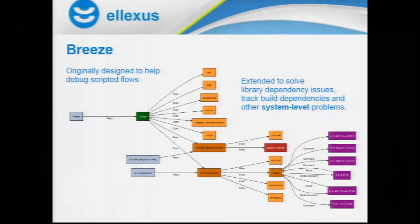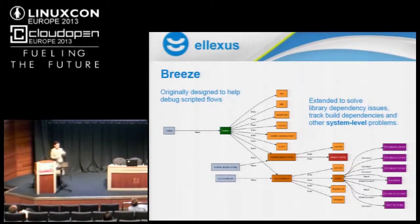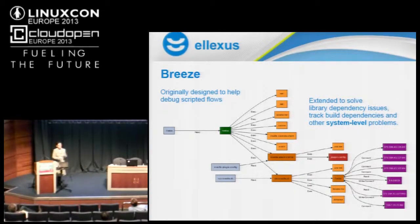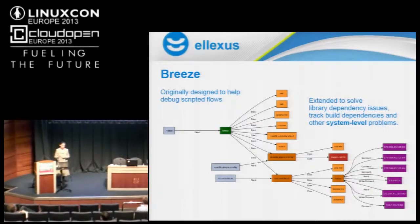So, this is what our tool looks like. We pull out tool hierarchies, program call hierarchies. What you're seeing there is actually a trace of Firefox. The root node is always shown in green. We show scripts in blue and programs in orange. So, what you're seeing there is that Firefox is actually an alias for a script. It calls two other scripts and a bunch of programs in the system. It then finally calls the Firefox binary itself, which makes a bunch of network connections shown in purple. This is originally designed to help solve problems with scripted flows, particularly in the semiconductor industry.